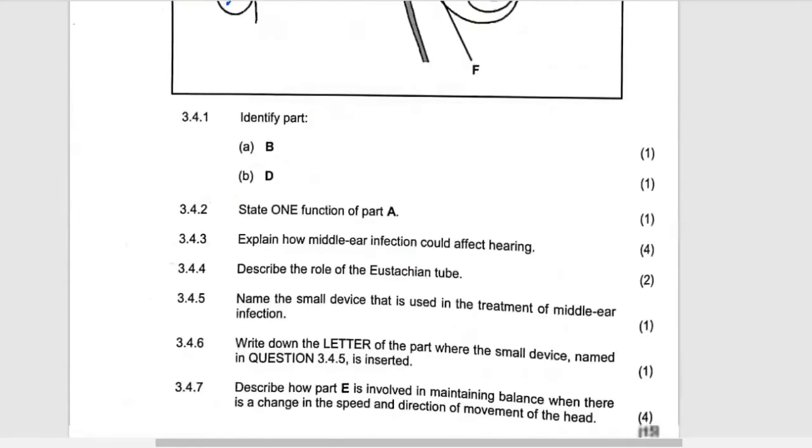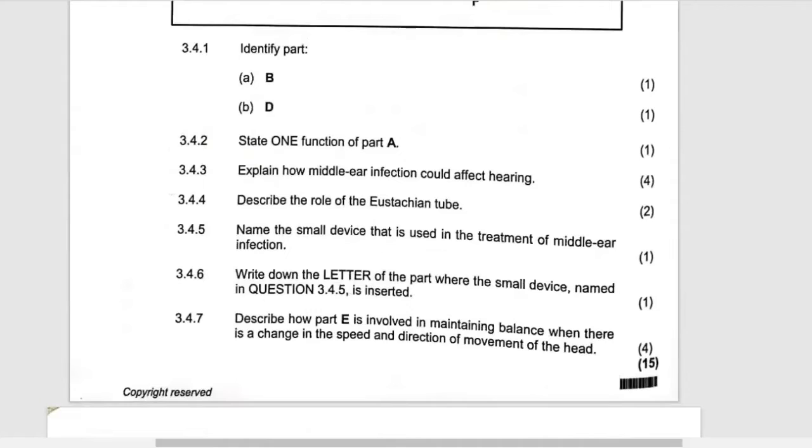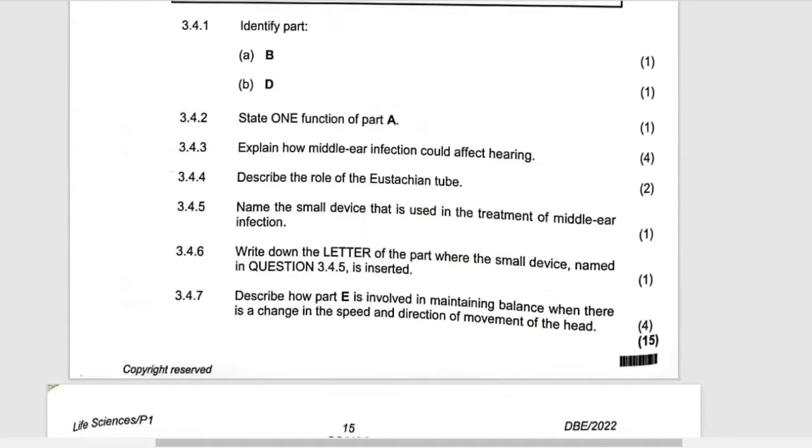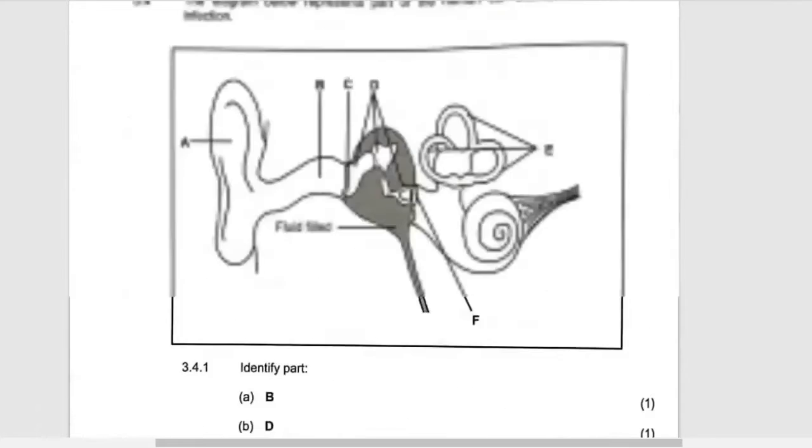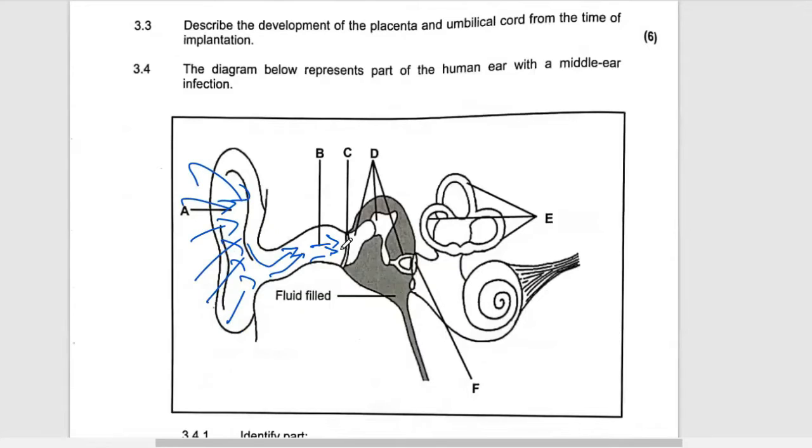And then another question they are saying that name the small device which is being used to treat the middle ear infection. Remember this device to be used is supposed to cut. Supposed to cut here and then we suck all the fluid which is inside here. We suck it out and after that we put that small device so that it is able to drain and make the middle ear to be dry.